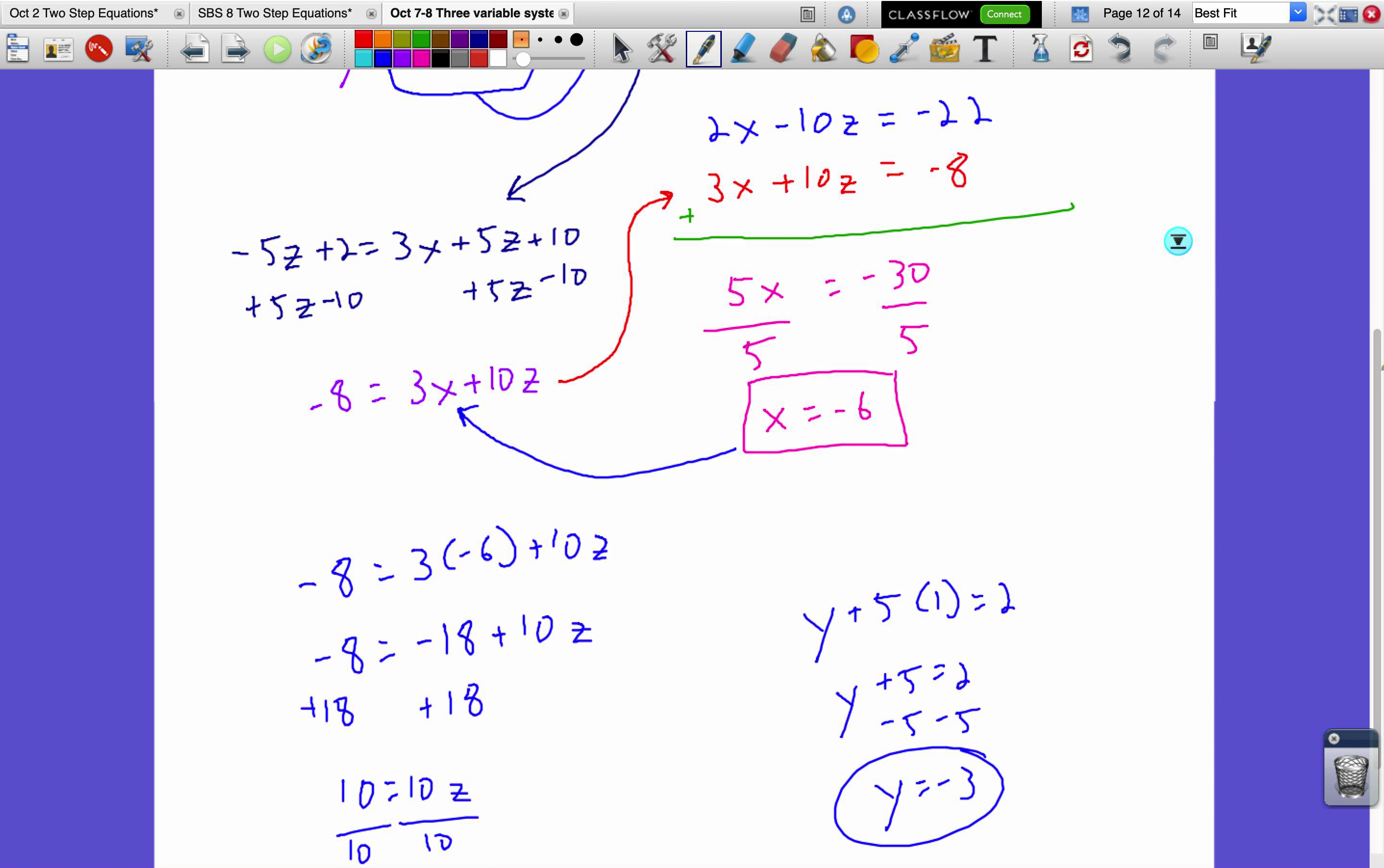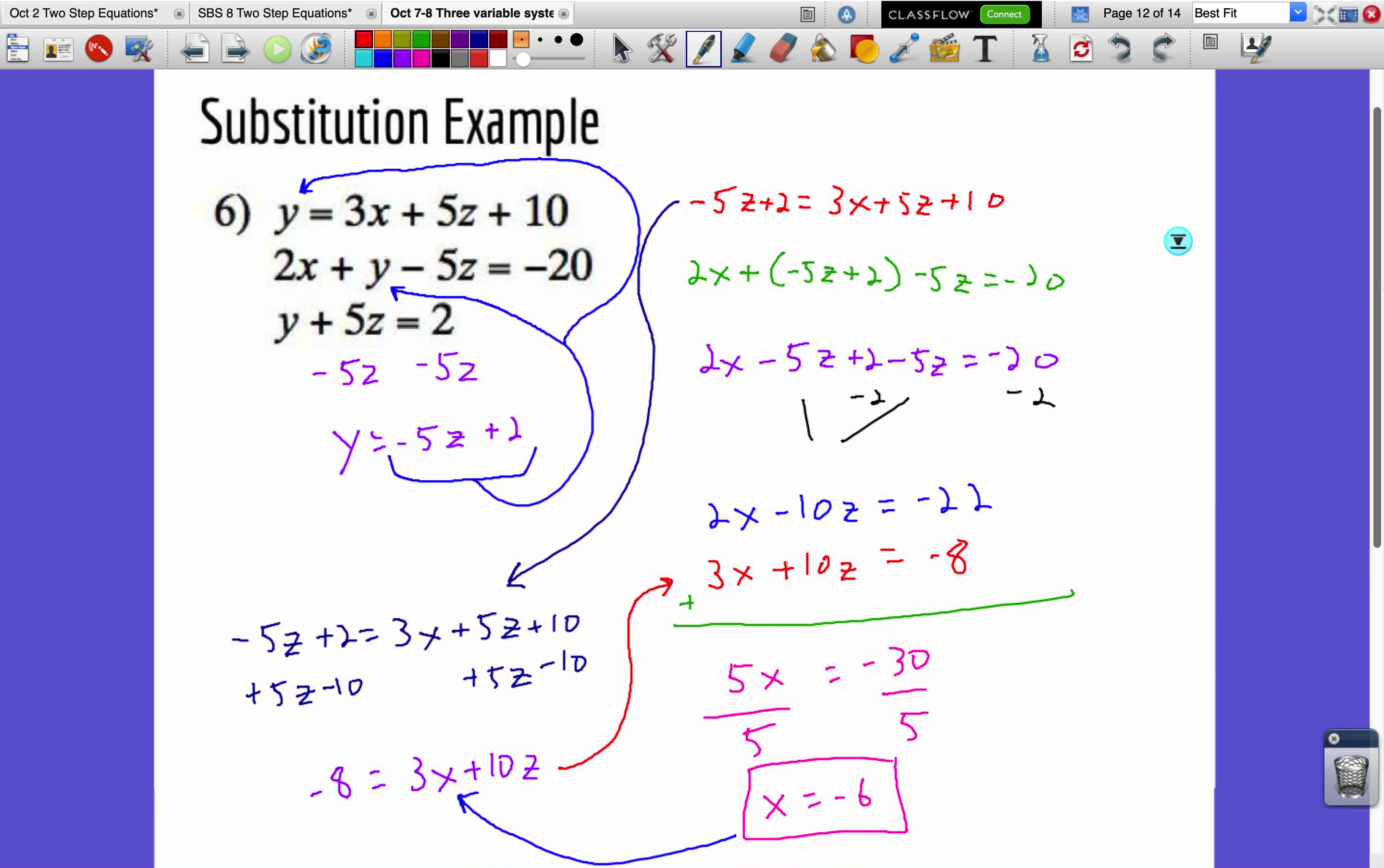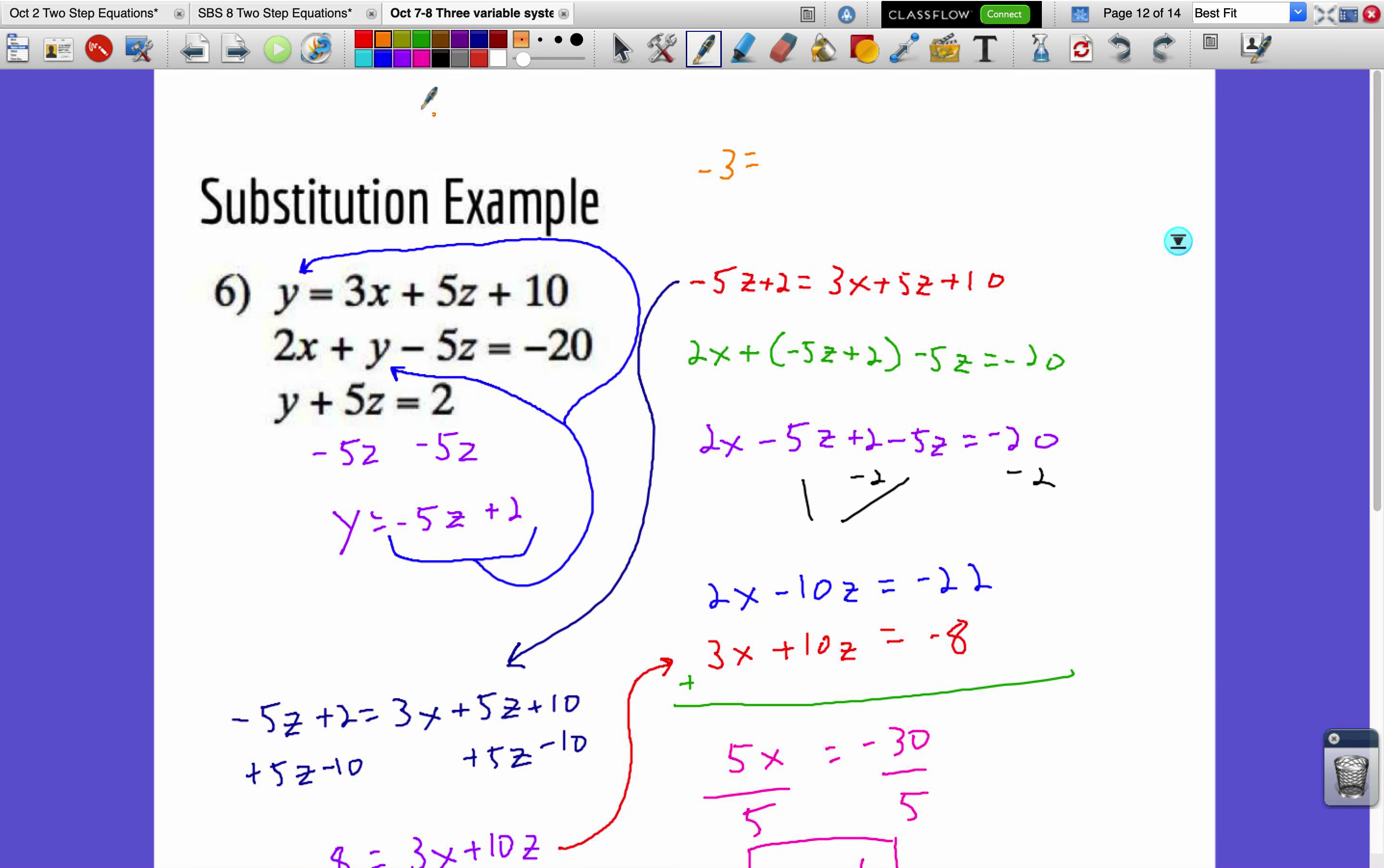All right, I finished solving for each variable, so let's put it into an ordered pair, x, y, z, and that would be negative 6 comma negative 3 comma 1. Let's double check that by plugging it into a different equation instead of the bottom one, negative 6, negative 3, 1. So, we'll plug it into that top equation. Let's just see what we get. Okay, so negative 3 equals, I said negative 6, negative 3, 1. So, negative 3 equals negative 18 plus 5z, that would just be a 5. Yep, negative 3 equals negative 18 plus 15, negative 3 equals negative 3. There's your double check.